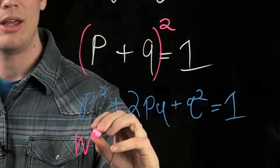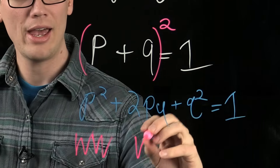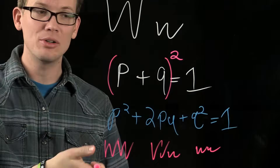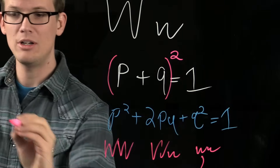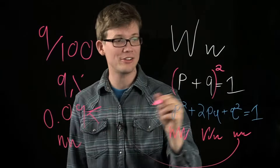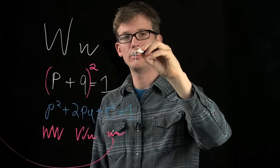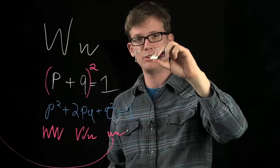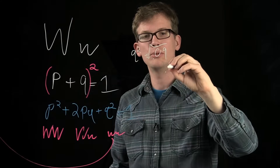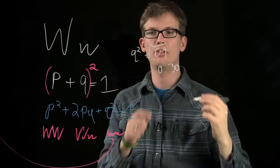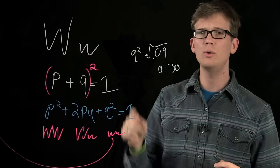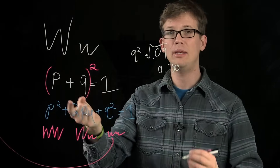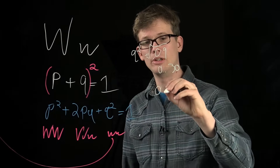So p squared is the odds of being WW homozygous dominant, 2pq is the heterozygotes, and q squared is the homozygous recessive. We know the homozygous recessive is 0.09, so we already have q squared. To get q, we just take the square root of 0.09, which is 0.30 — so 30% frequency of the q allele in the population. And then we just subtract from 1 to figure out p, which is 0.70.